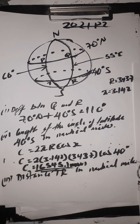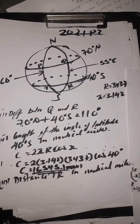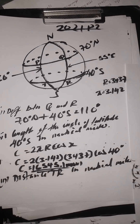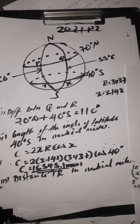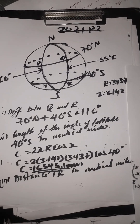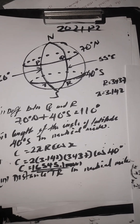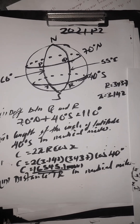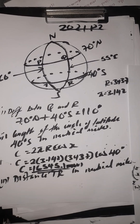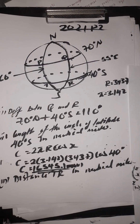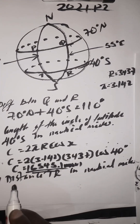The last question asks us to find the distance TR in nautical miles. TR is the distance along the circle of latitude. The formula we will use is the arc length formula for a circle of latitude.